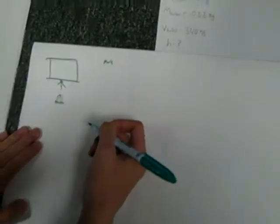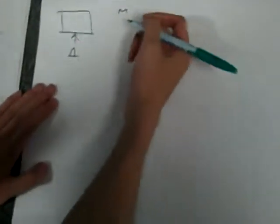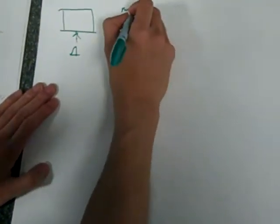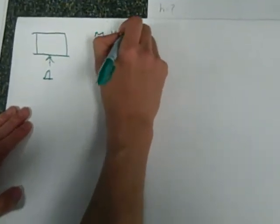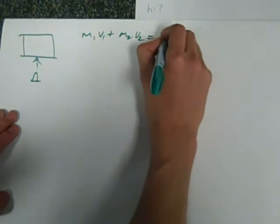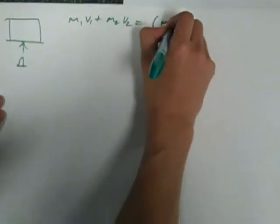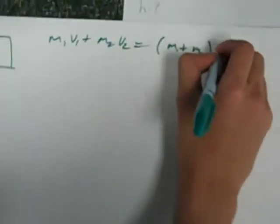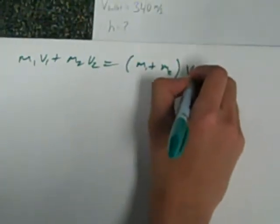So we want to find momentum by the conservation of momentum, which is m₁v₁ plus m₂v₂ equals m₁ plus m₂ times the new velocity, which I'll call v_new.